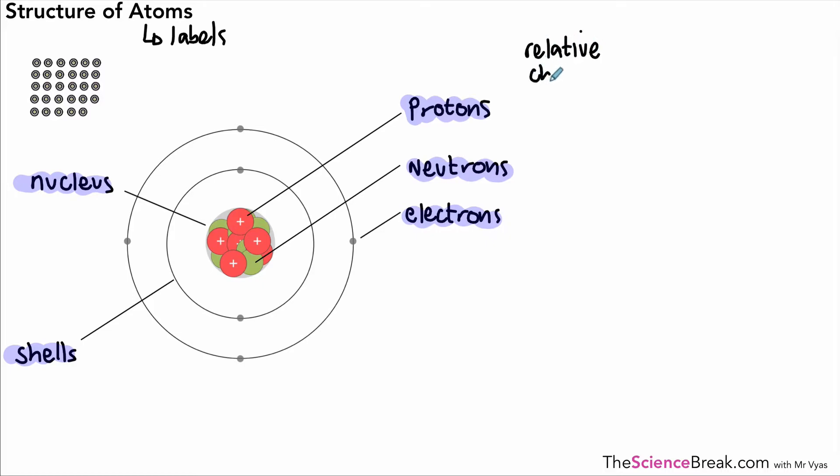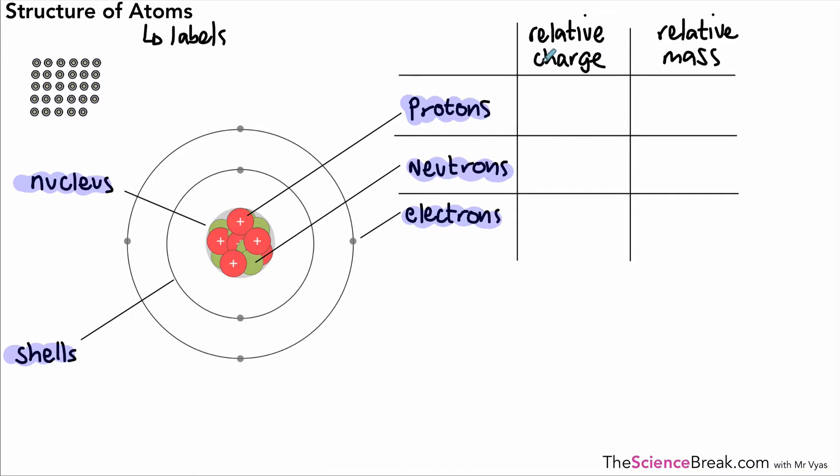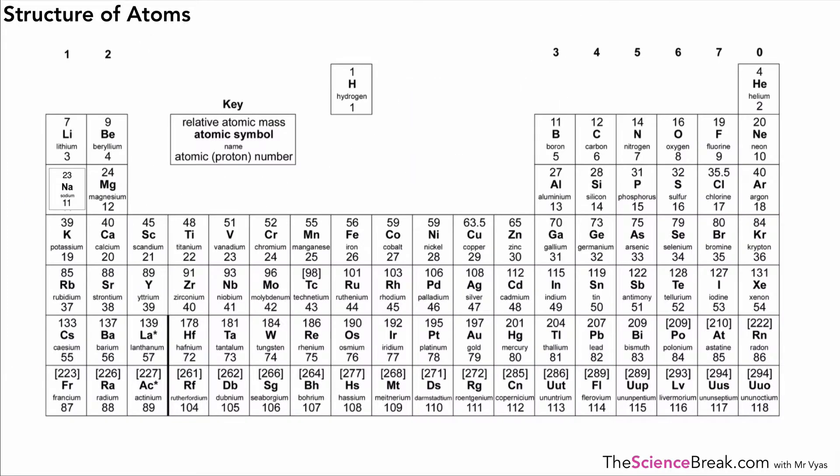We have something called the relative charge and the relative mass, and we can put that into a table. For relative charge: protons have +1, neutrons have 0 because they're neutral, and electrons have -1. We use the word 'relative' because it's compared to each other. The relative mass of a proton is 1, neutron is 1, and electron is very small—about one two-thousandth of the mass of a neutron. So protons and neutrons have the same mass, which we describe as 1.